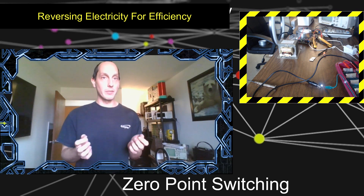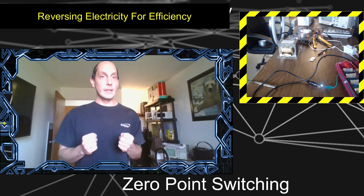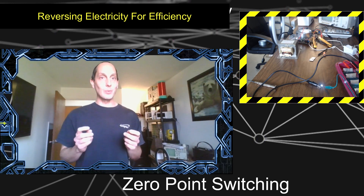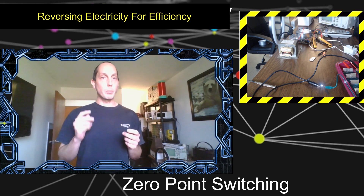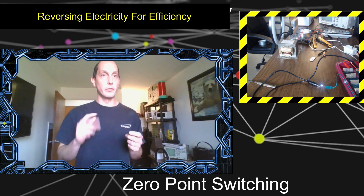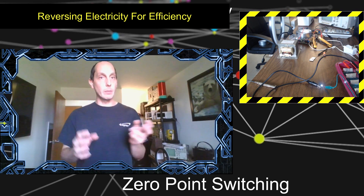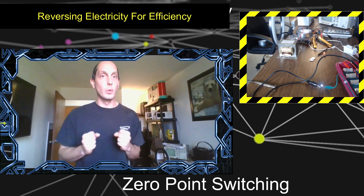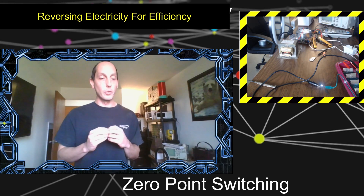Now, if we reverse — and that's all we need to do, reverse the role — you want to take the pure potential. You want voltage to do the work of current, and current to do the work of voltage. If you literally flip the roles, you get a much more efficient transformer, would be the term for it.